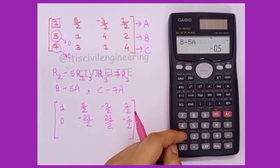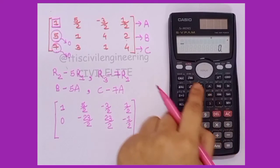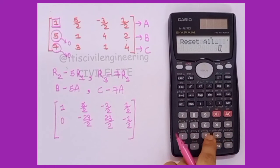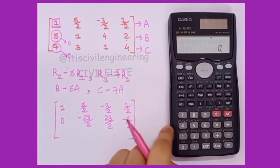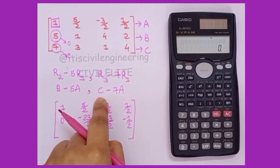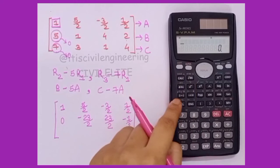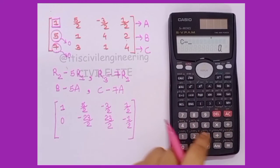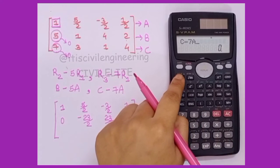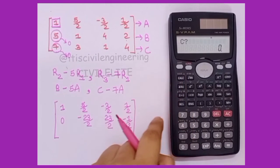Then we have c minus 7a. Now I'll just press a c, also I'll press shift mode 3 equal to equal to. We have reset the calc. Now I'll just write this c minus 7a, which is alpha c minus 7 alpha a. Don't press equal to, you have to press calc.